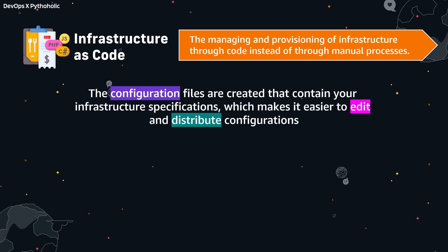In IaC or infrastructure as code, configuration files are created that contain your infrastructure specifications — like what instance type you're going to use, how much memory you need, what type of scaling it has, how access is provided to the application, attaching load balancing. You might ask: what is the importance of configuration management tools? Are they the same as IaC? We make use of IaC and configuration management tools in tandem, but they have their own specific purposes.